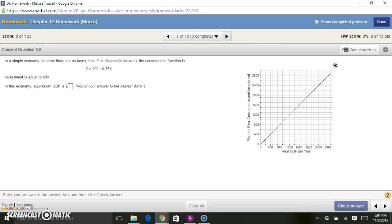This is concept question 3.5 from chapter 12, and they give us here the consumption function for a simple economy. Assume there are no taxes, therefore Y is the disposable income, and investment is equal to 400. So in this economy, the equilibrium GDP is what they ask.